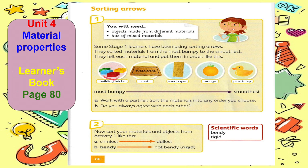Now, you can see here the building bricks, from most bumpy up to the smoothest. After building bricks comes the mat, then the sandpaper, and the orange, and the plastic toy.